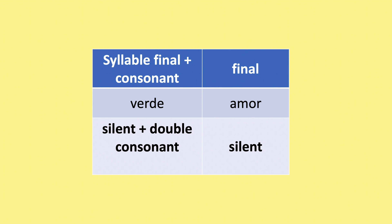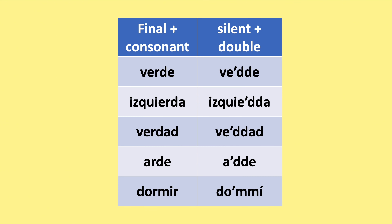In some regions, the R at the end of a syllable is not pronounced, making the consonant that follows doubled, or the R is simply silent. So instead of verde you get 'vede', izquierda becomes 'izquieda', verdad becomes 'vedá', arde becomes 'ade', dormir becomes 'domir'.